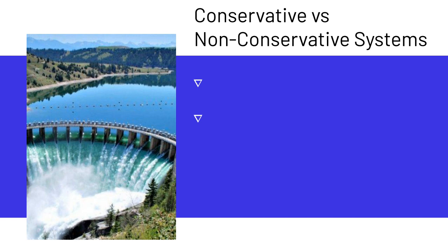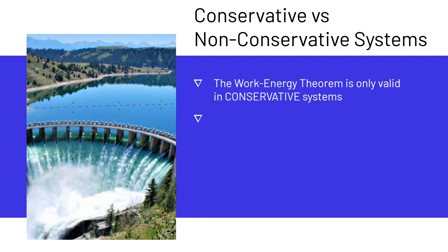So how does the Work Energy Theorem operate in conservative versus non-conservative systems? The Work Energy Theorem is only valid in conservative systems — work only becomes kinetic energy entirely in a conservative system.